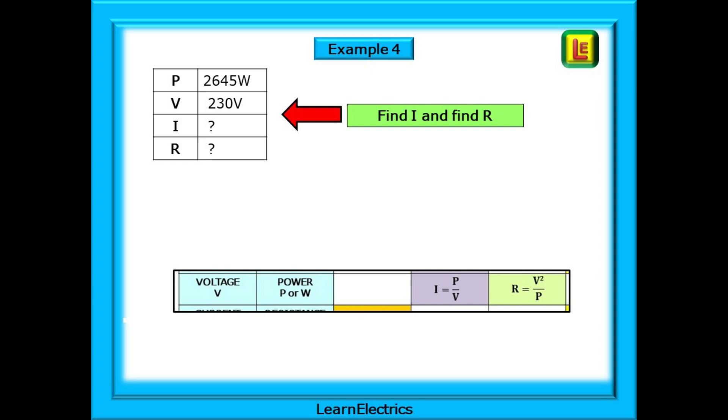Now for example 4. Find I and R if we are given the values of P and V. This should sound familiar. It's one of the most frequent questions asked when choosing fuse and circuit breaker sizes. What size fuse do we need if we only know the wattage of an appliance and the working voltage? Pause the video and have a go.